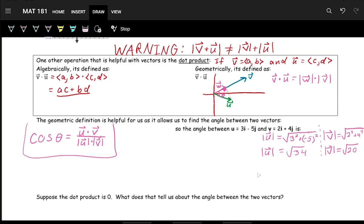And then the dot product of the two vectors, u dot v. We multiply the x components, so 3 times 2, add that with the y components, negative 5 times 4. So this is 6 minus 20, which is negative 14.